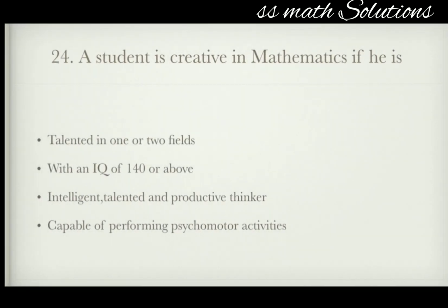A student is creative in mathematics if he is — talented in a field with an IQ of 140 or above, intelligent, intelligent and talented and a productive thinker, or capable of performing psychomotor activities? The answer is option C — intelligent, talented, and a productive thinker.